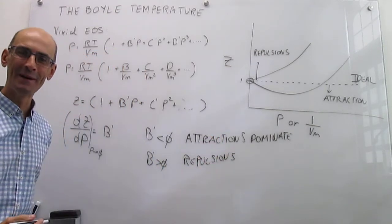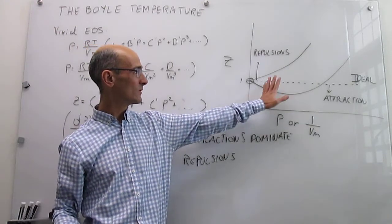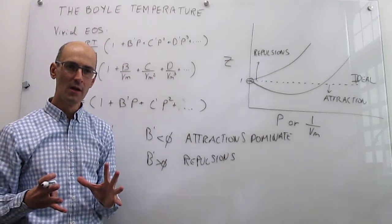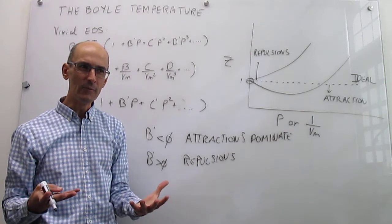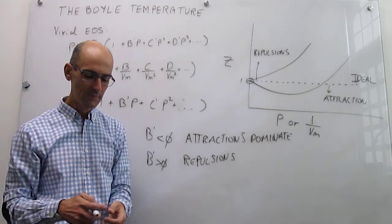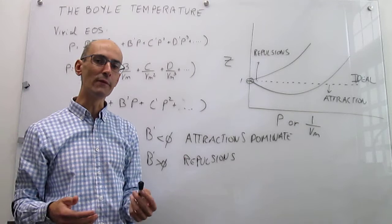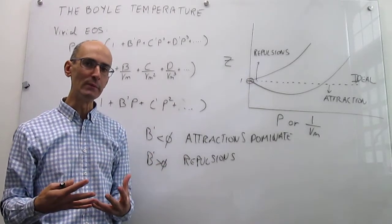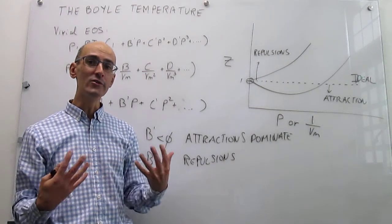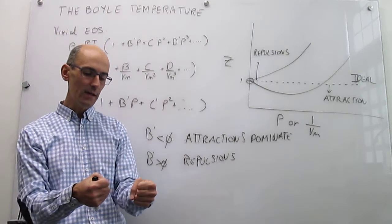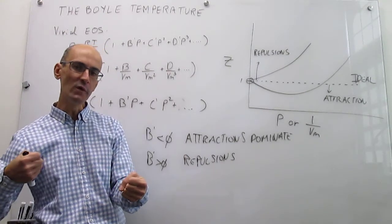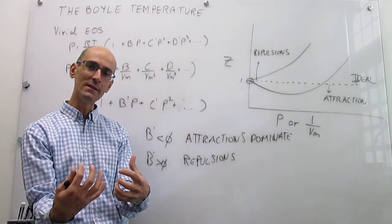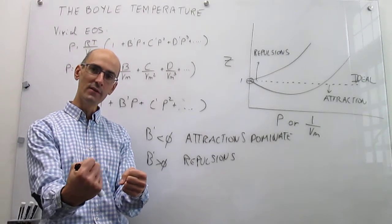Now we introduce the concept of the Boyle temperature. The only difference between these two curves is that they are taken at different temperatures — lower temperatures give one curve and higher temperatures give the other. So how is temperature really related to which forces are dominant? This is easy to understand by appealing to the concept of thermal motion. When you think about a gas, that gas is moving according to its temperature. If the temperature is quite low, your thermal energy to move will also be low, and if you come close to a neighboring gas particle while moving slowly, you are going to be more likely to be attracted to that nearby particle — you spend enough time in the vicinity of the attraction to actually feel that force.